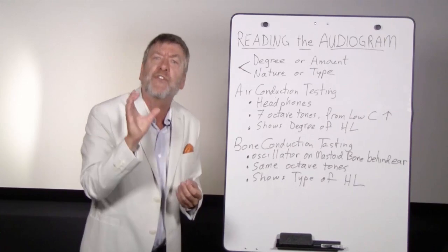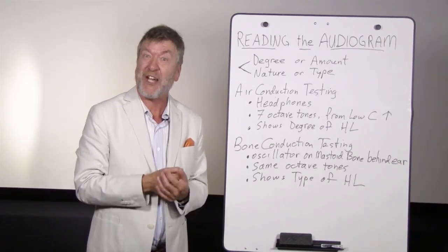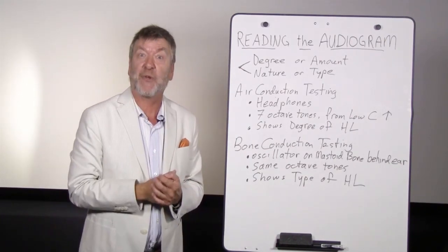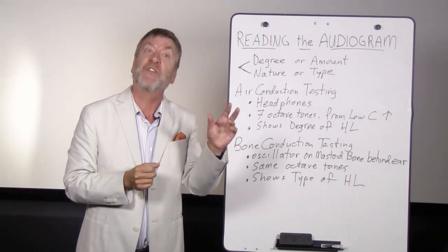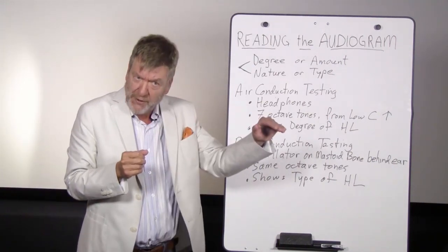Air conduction results are shown with X's and O's. We play tic-tac-toe. The O's represent the right ear. The X's represent the left ear. And these are shown across the audiogram.